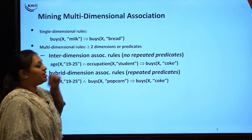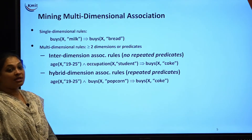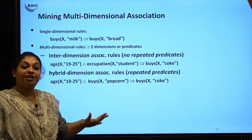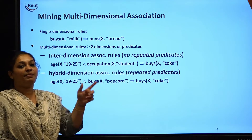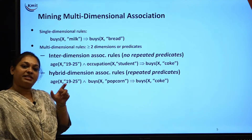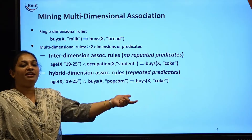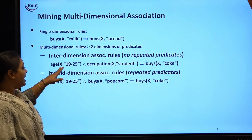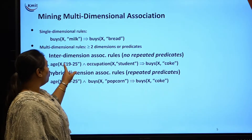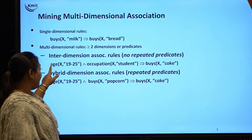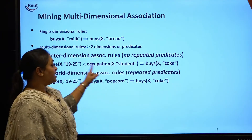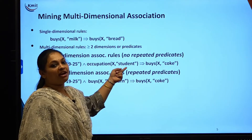Here we have inter-dimensional association rules and hybrid dimensional association rules. In inter-dimensional, there is no repetition of predicates — no repetition of attributes. When I say A plus B equals C, I cannot reuse A again in the result. You can see the example: age and occupation — two different attributes — give me 'buys coke.' Age is one attribute, occupation is another attribute, and together they give me the result 'buys coke.' There is no repetition of predicates here.